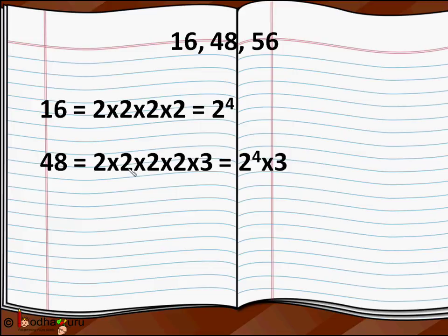48 can be represented as 2×2×2×3, that is 2^4 × 3. And 56 can be written as 2×2×2×7, which is 2^3 × 7.